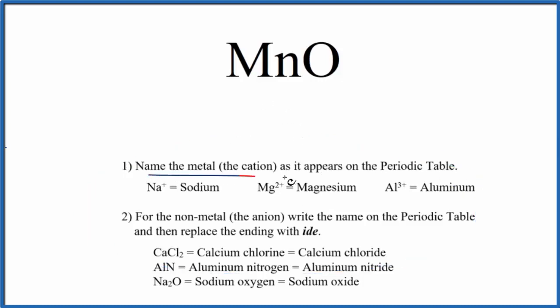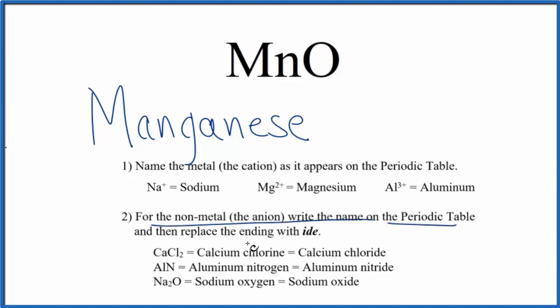First, we'll write the name of the metal as it appears on the periodic table. Mn, that's manganese. Next, we'll write the name of the non-metal as it appears on the periodic table. Replace the ending with ide. So we have oxygen, and we're going to replace this with ide. So at this point, we have manganese oxide.